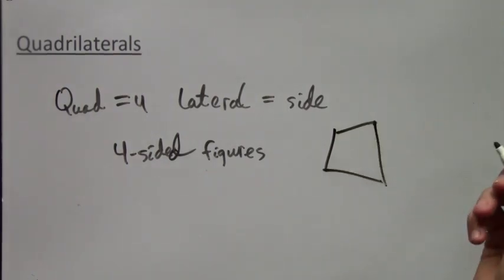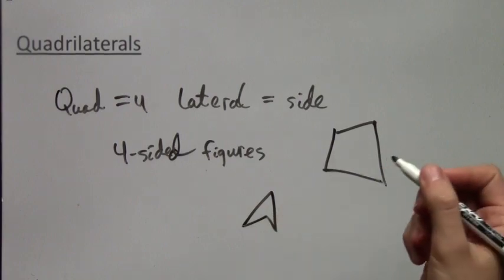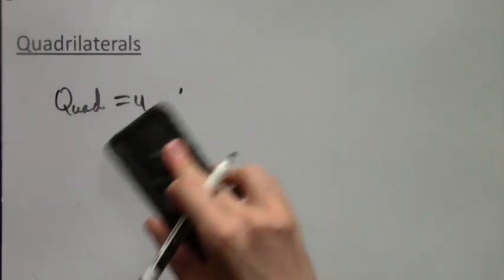Because in general, they can look like all sorts of crazy shapes as long as they have just four sides. But some special types of them have very convenient properties. So let's get to it.